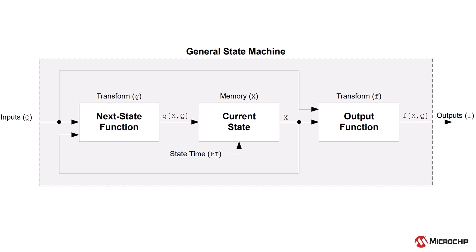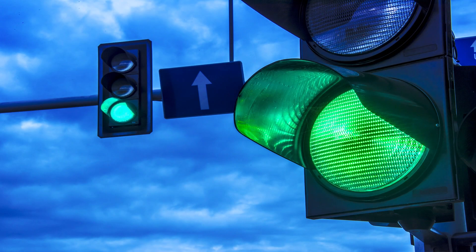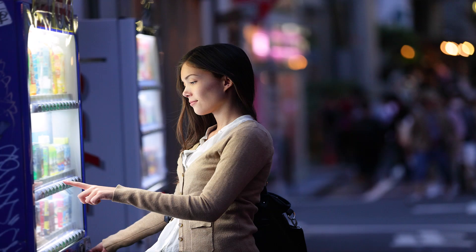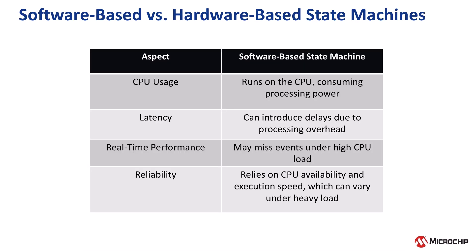State machines are a common way to manage sequential behavior in embedded systems. Examples include elevator controllers, traffic light systems, vending machines, and more. They are often implemented in software; however, software-based state machines can introduce processing overhead, increase latency, potentially missing real-time requirements, or missed events in time-critical applications.